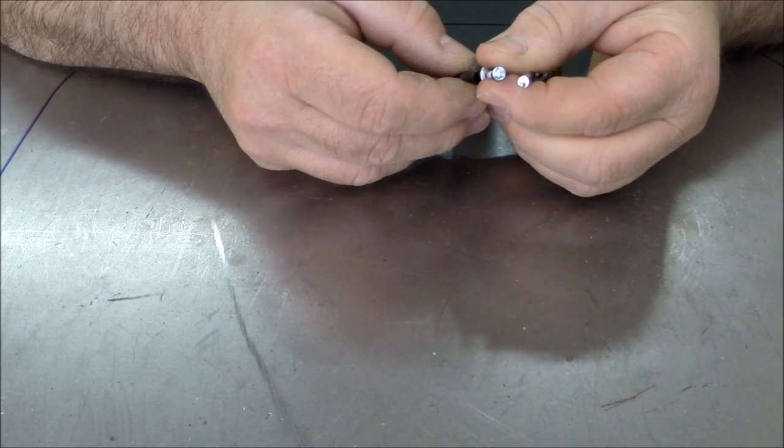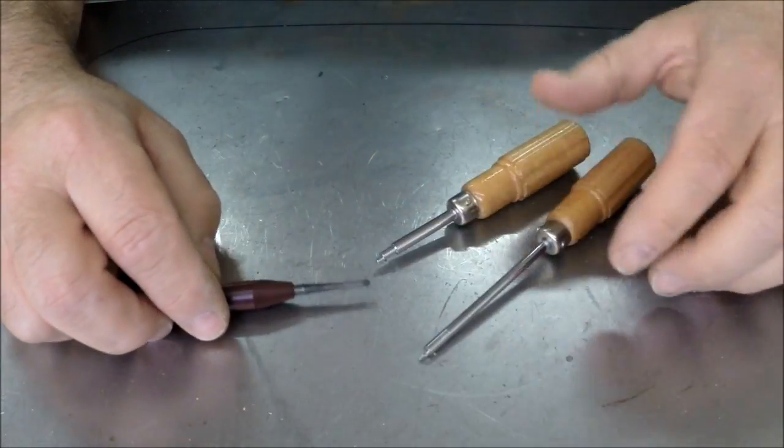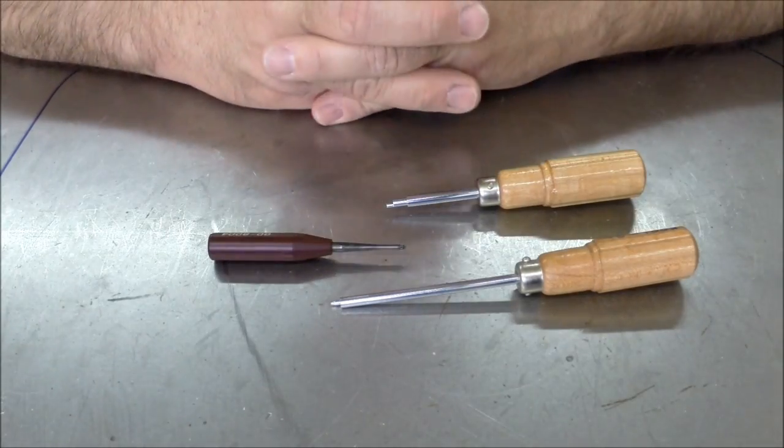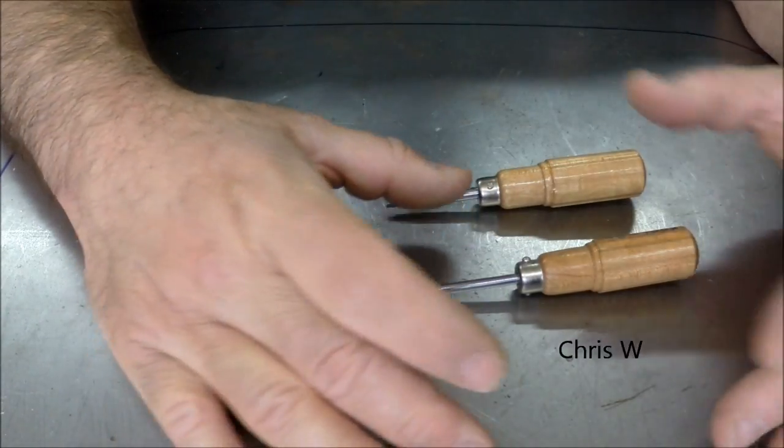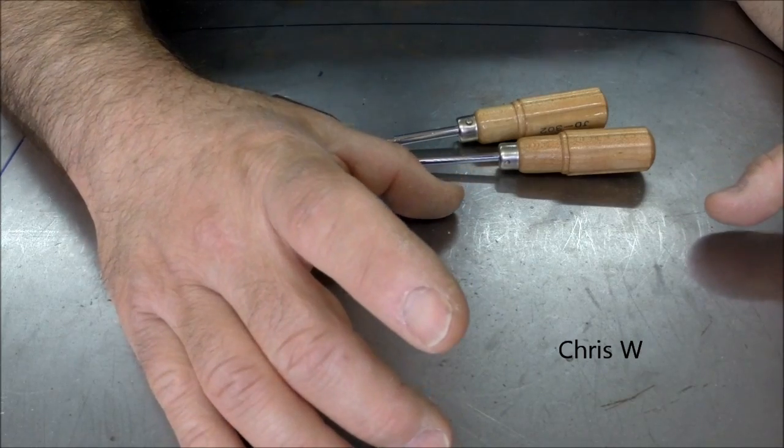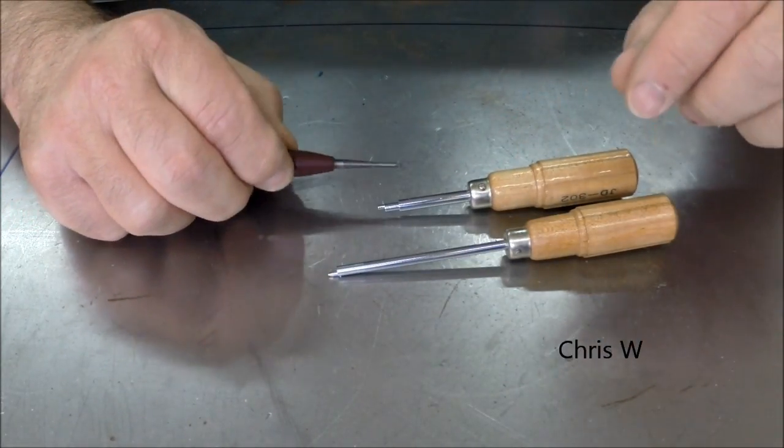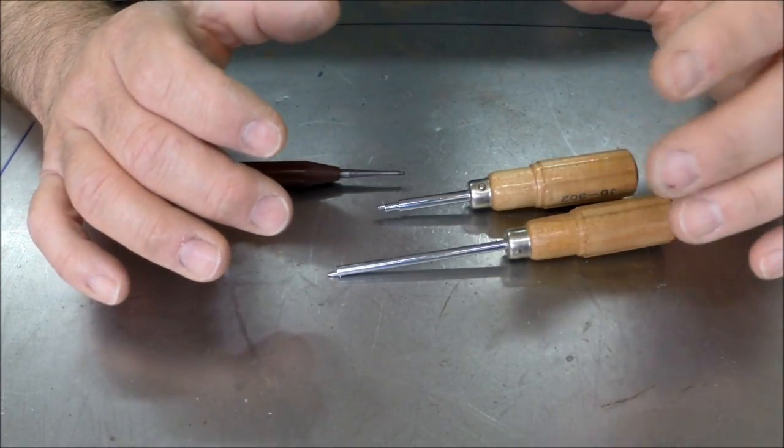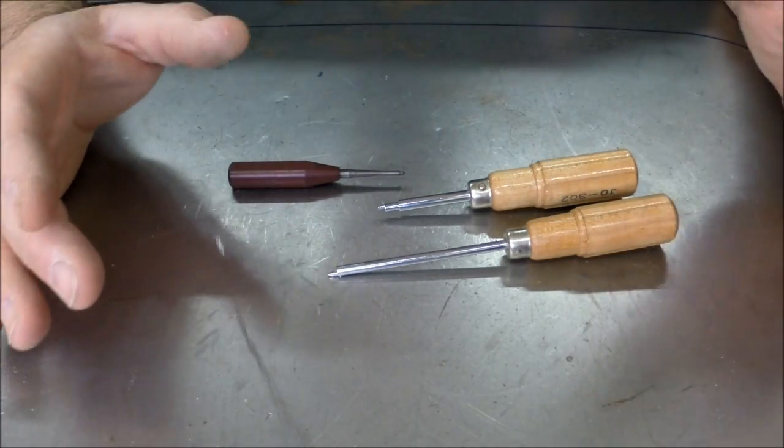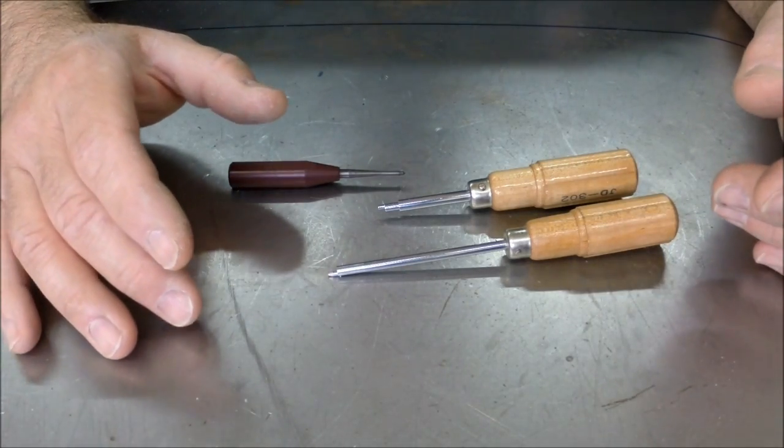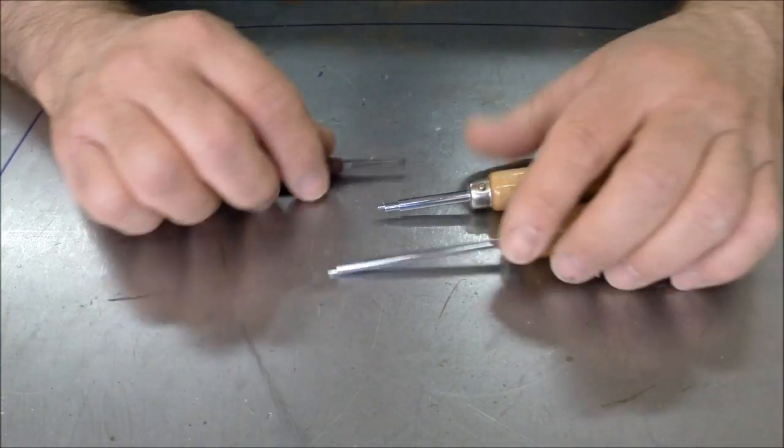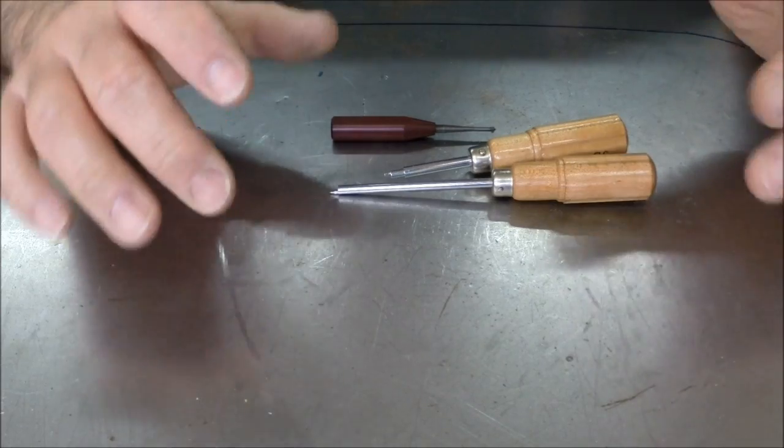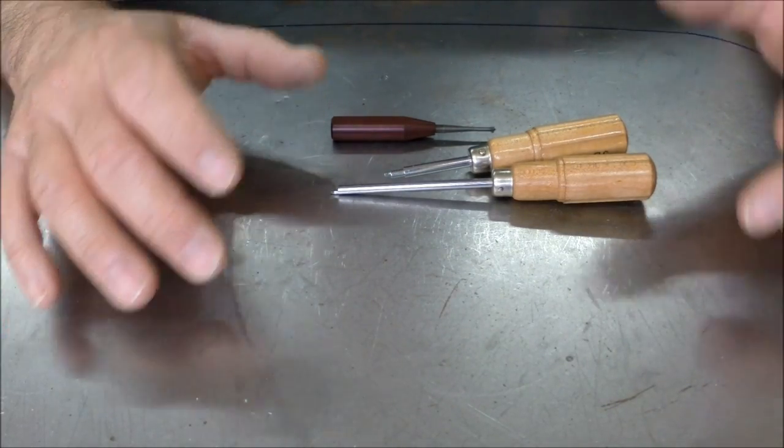Now what these are, a couple of guys guessed what they were. One guy emailed me privately, and another guy nailed it online, and that was Chris W. He pegged these. These are Sony alignment tools, and what they do is they align the read heads for reel-to-reel video and audio tape stuff. I'm going to cut away to some images that Walter Cepizzi sent me.